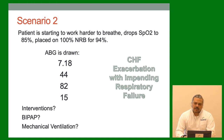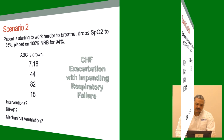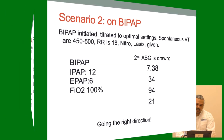We're going to put this patient on BiPAP, get them comfortable. Respiratory rate comes down to 18. Nitro and Lasix are given. We get those settings and a repeat gas that looks like we're going in the right direction.